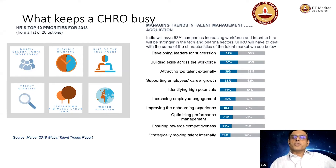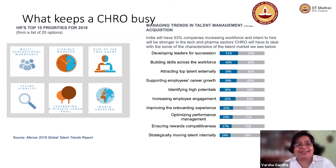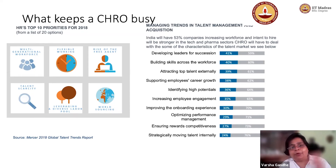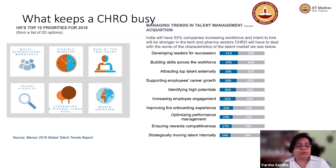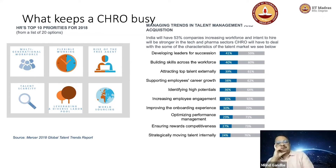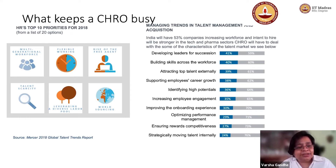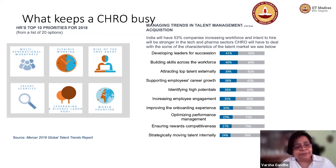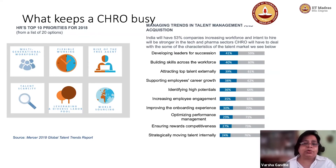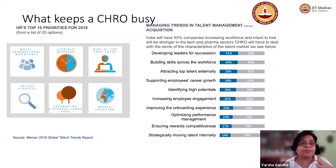Before COVID happened, the CHRO had to make sure that somebody who started work in 1990 is as engaged as somebody who is going to start work in 2020. These two generations, even just looking at India, are very different. One came from an extremely scarcity mindset, and the other is somebody who's hooked on to information 24/7. So managing a multi-generational workforce has been one of the biggest challenges - how do you make sure that your benefits actually talk to both generations?